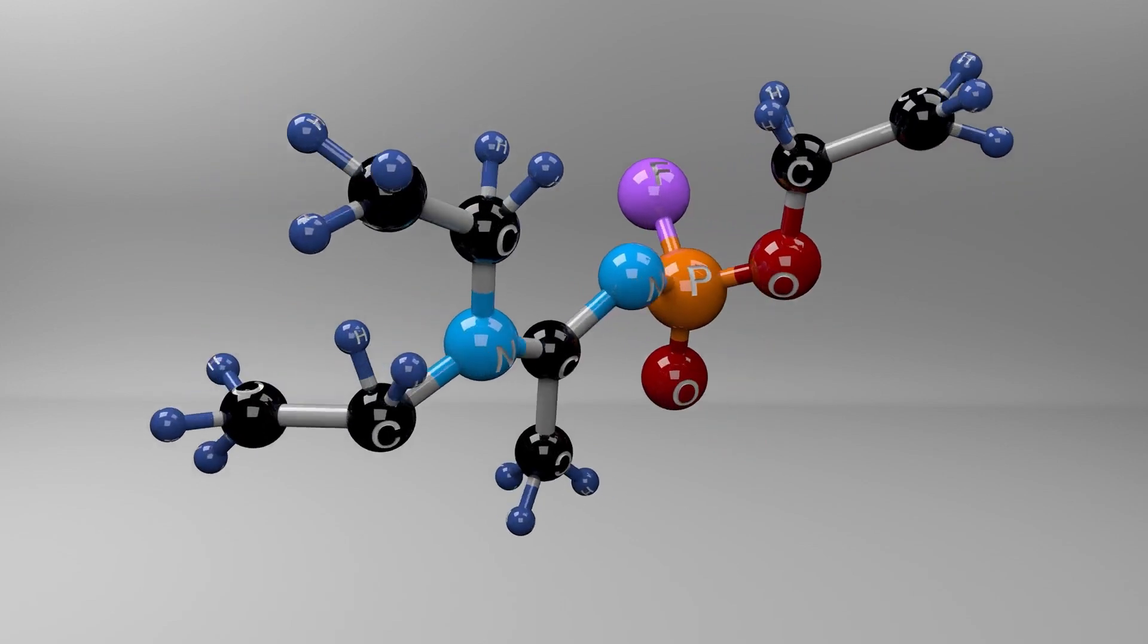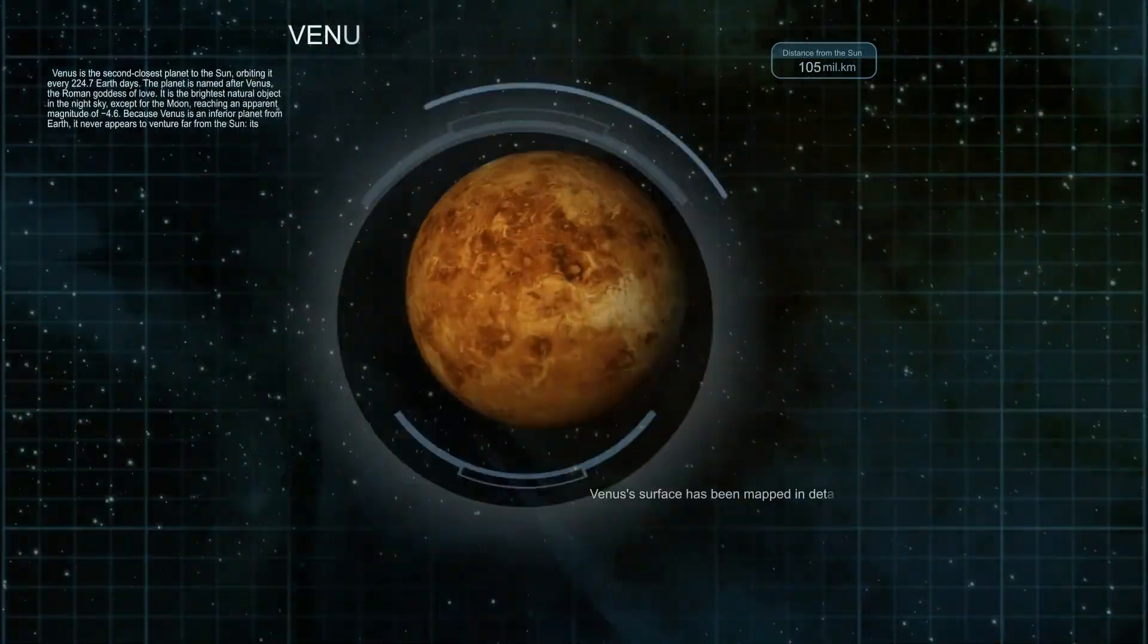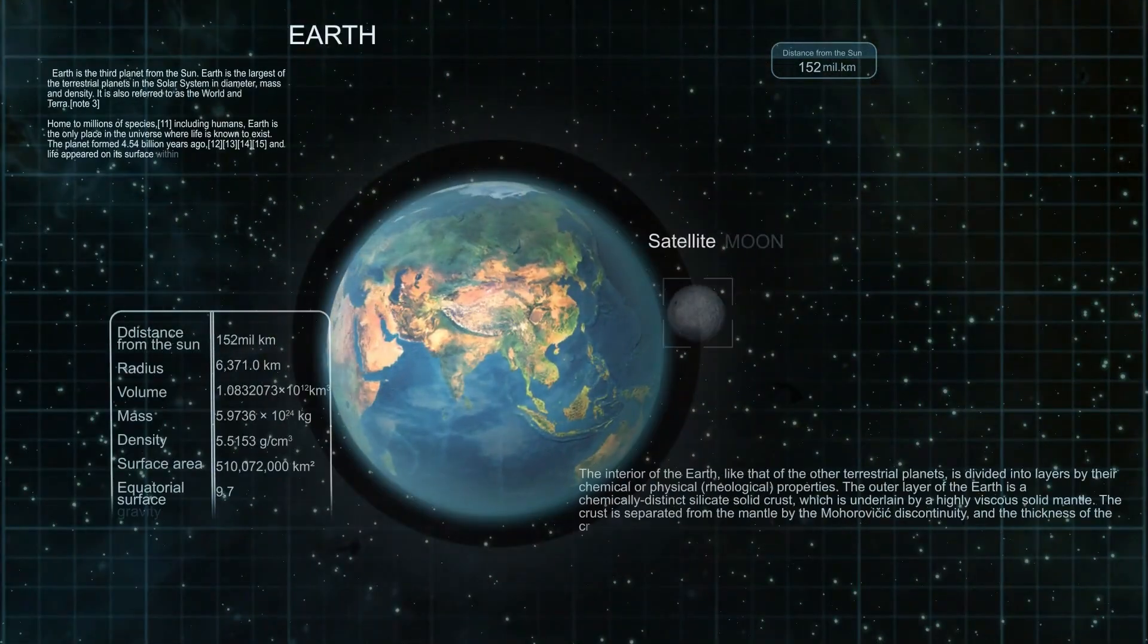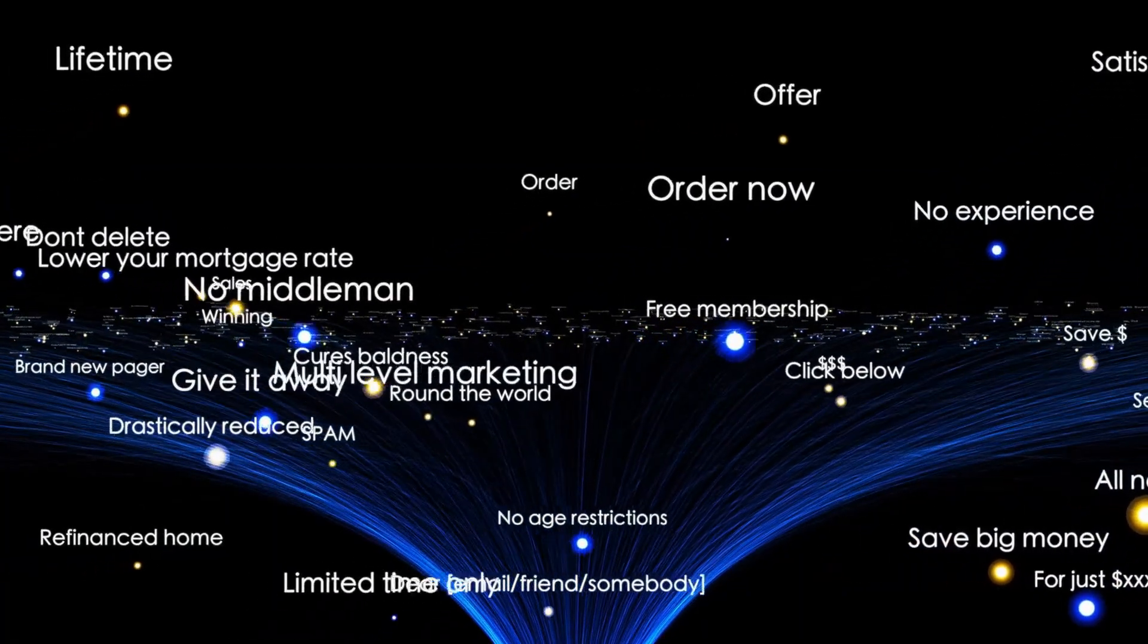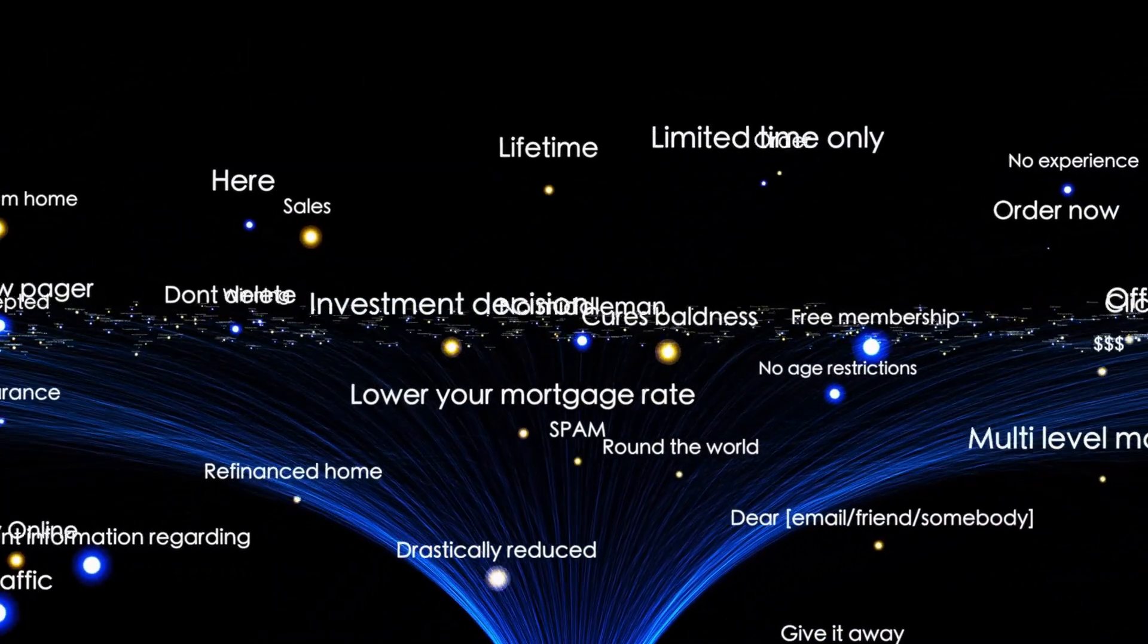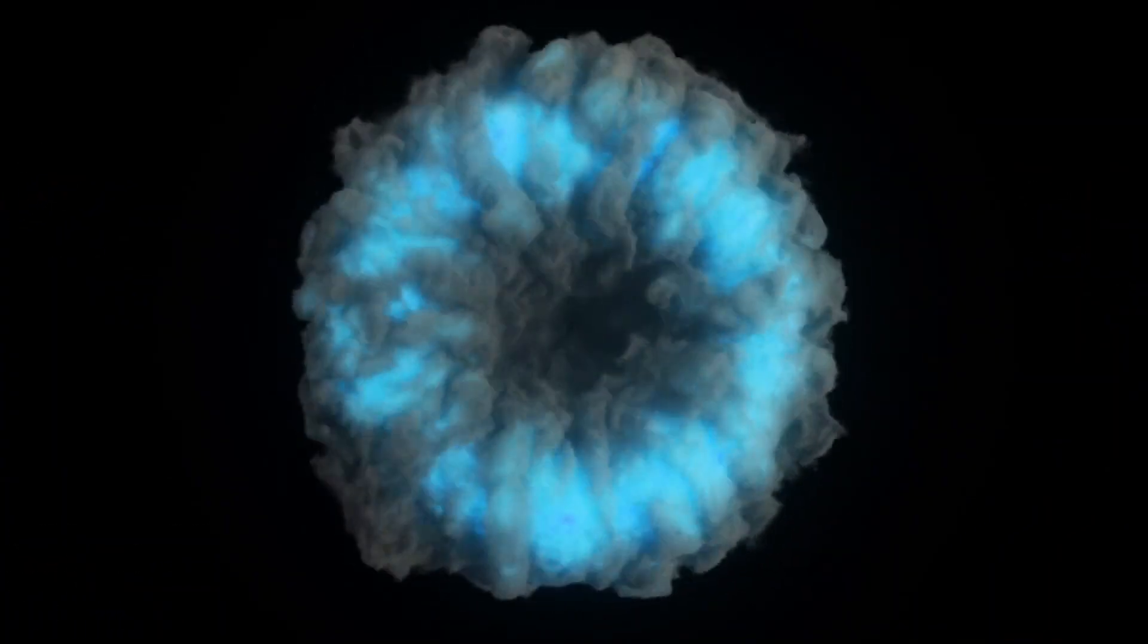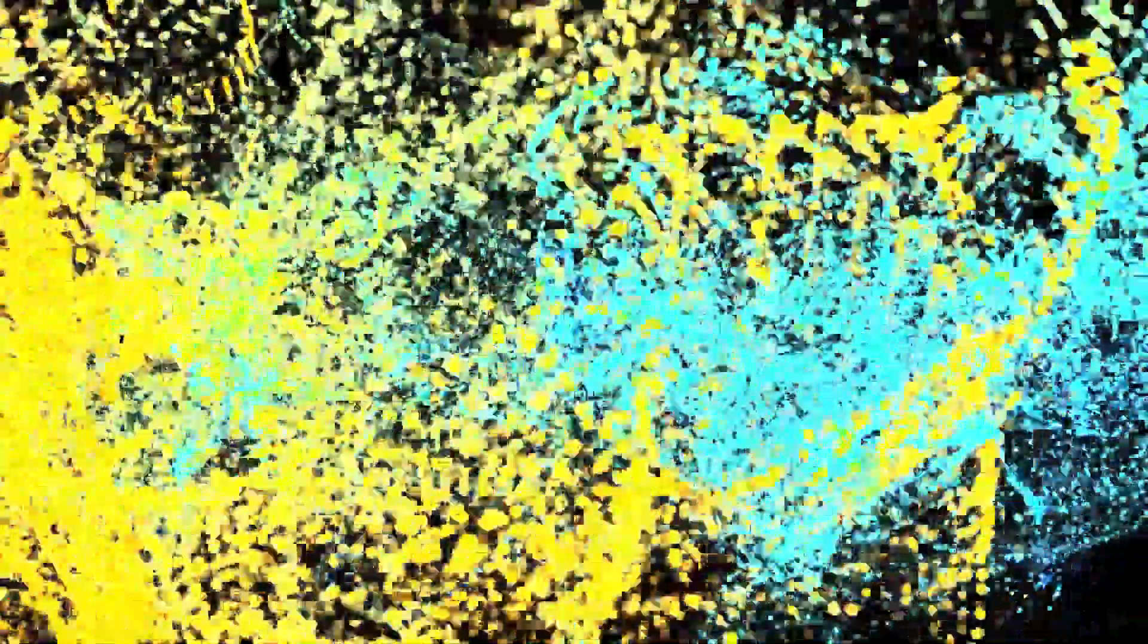Another possibility is that Oumuamua could be an artificial construct, a piece of alien technology or a probe launched by an intelligent civilization. Its odd shape and unexpected motion fueled this hypothesis. Some researchers noted that the object's structure could be consistent with a light sail, something designed to be pushed along by sunlight rather than relying on engines or gas. This kind of propulsion could explain the acceleration without visible emissions.